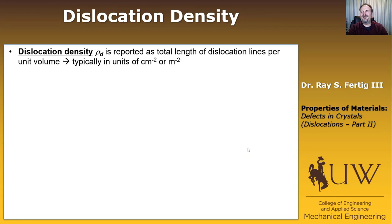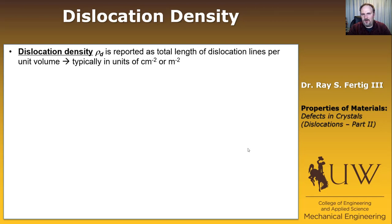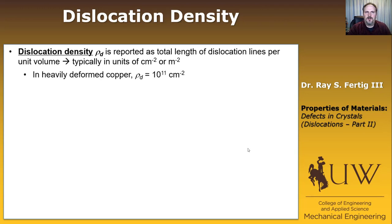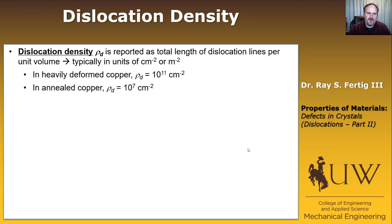How do we quantify dislocations? We report what's called dislocation density, which is simply the total dislocation line length per unit volume, typically in units of 1 over centimeter squared or 1 over meter squared. In heavily deformed copper, the dislocation density is typically 10 to the 11th per centimeter squared. In annealed copper, it's typically about 10 to the 7th per centimeter squared.